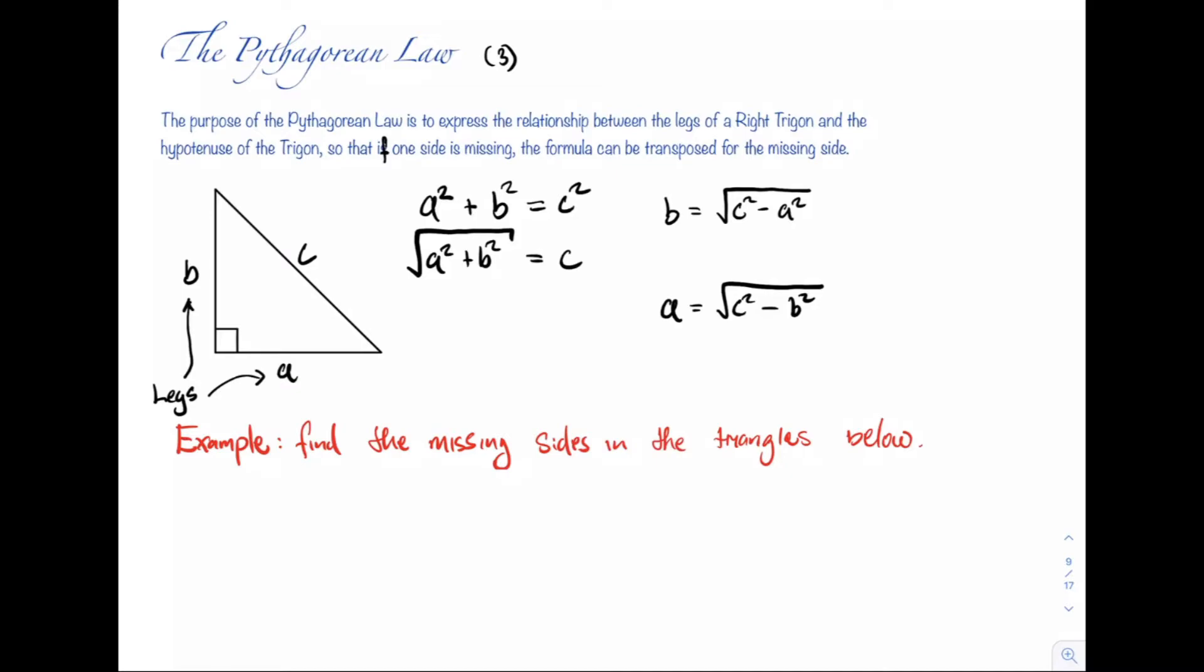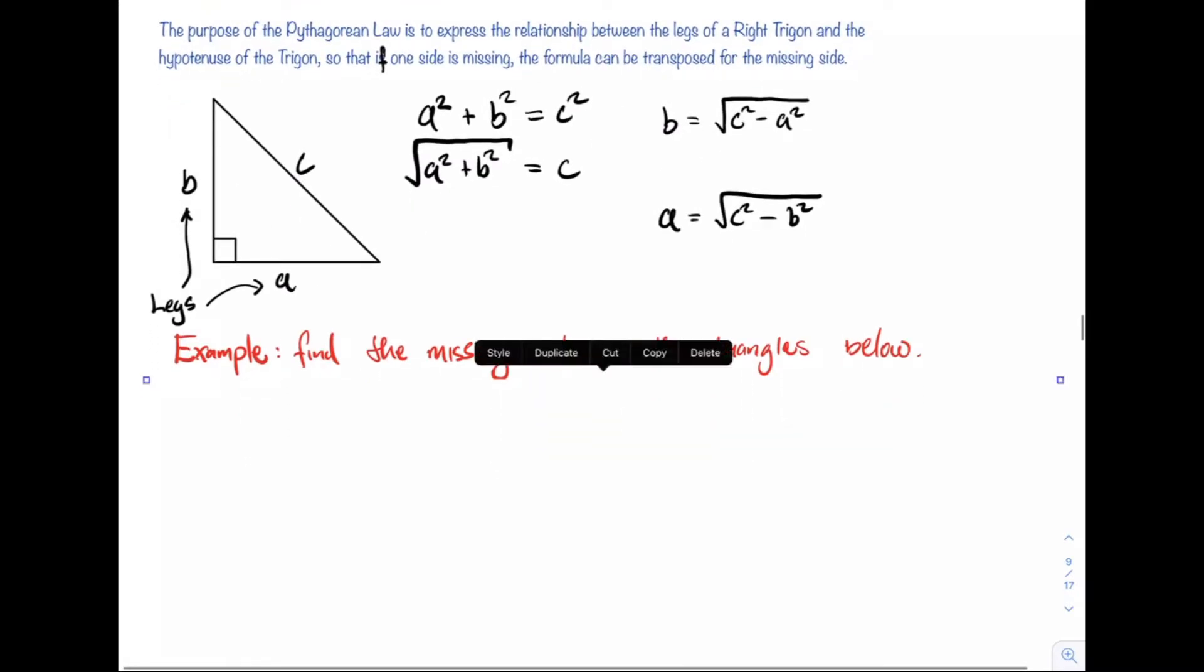So let's jump right into some examples. And remember, the purpose of the Pythagorean law is to find the missing side. So we have to have two sides and one side missing. Let's jump right into these examples.